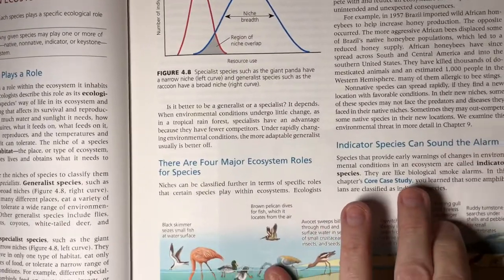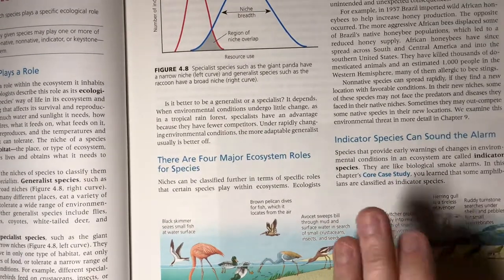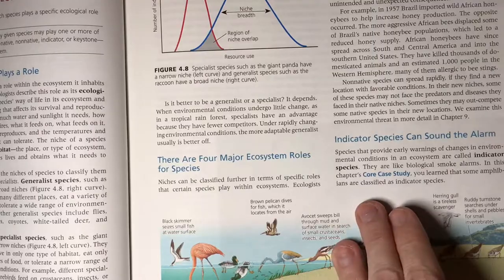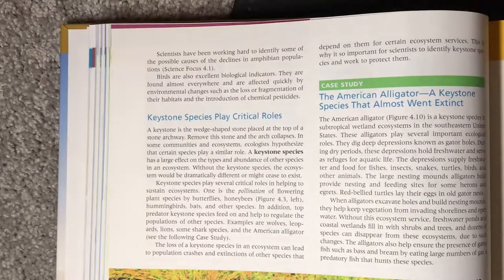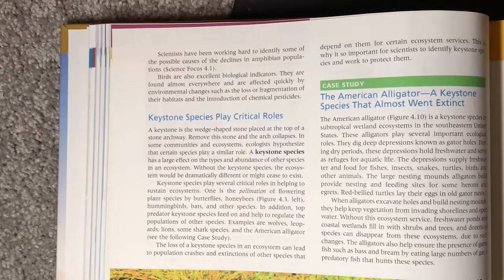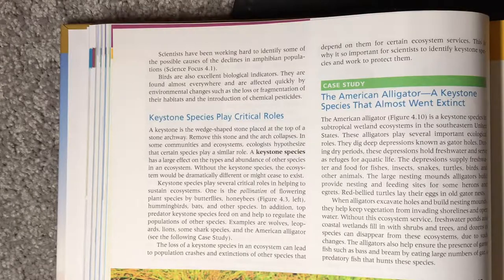Indicator species — including amphibians, birds, butterflies, and frogs — are great examples because of their sensitivity. Frogs especially, because of their permeable skin, are particularly sensitive to pollution. Birds are really good indicator species because they are migratory and can tell you about multiple different locations on the globe based on their population numbers.